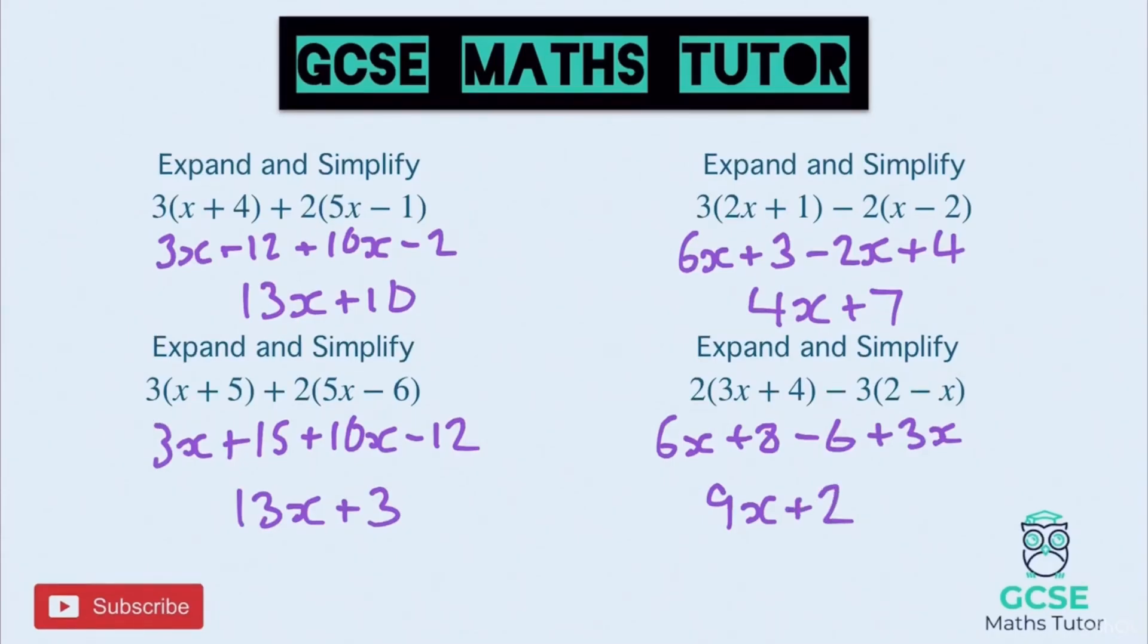Obviously in some of these scenarios here you could have ended up with a negative at the end there. None of these actually did because of our numbers. If we have a look just at this first one for example, we had a positive 12 take away 2 and that resulted in positive 10. But it could be that you had positive 2 take away 10 that would have resulted in a negative at the end there. So you've just got to be very very careful. All of these were quite nice but you get the general idea of how to approach these questions.